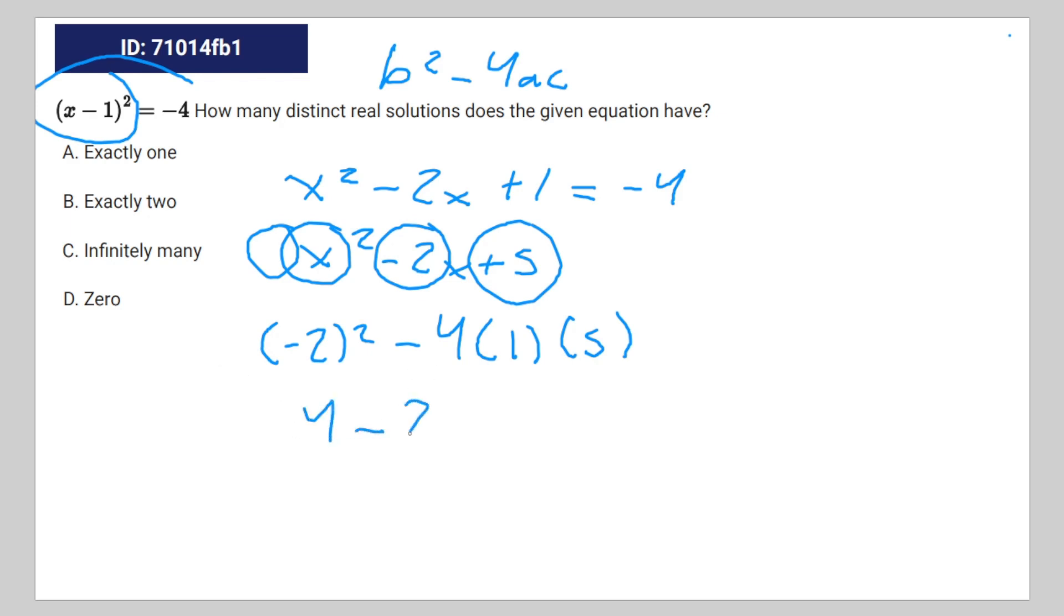And that is going to be 4 minus 20, which is equal to negative 16. And whenever the discriminant is less than 0, that means there's 0 real solutions. Therefore the correct answer is D, zero.